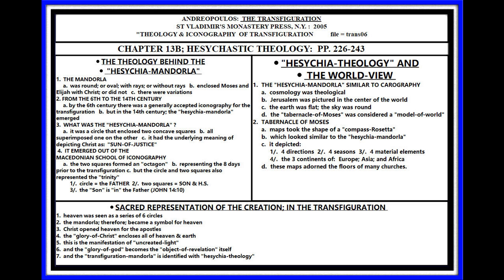Heaven was seen as a series of six circles. The Mandala, therefore, became a symbol for heaven. The cloud of glory descends out of heaven onto Moses, Elijah, and Christ — the cloud of glory descends on the new Exodus Transfiguration, just as the cloud of glory descended on Mount Sinai in the first Exodus. So the Mandala was a symbol for heaven.